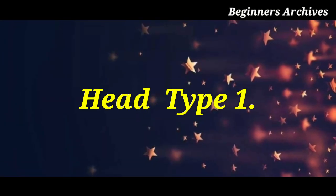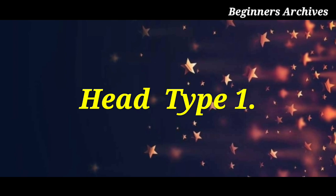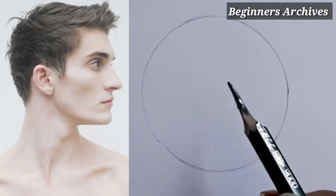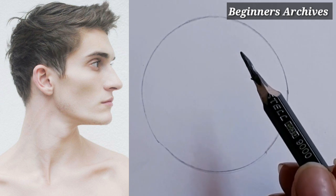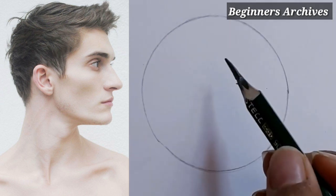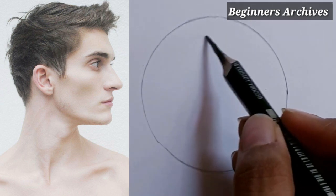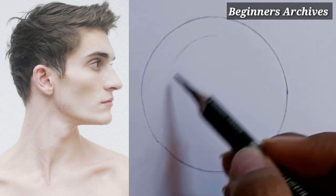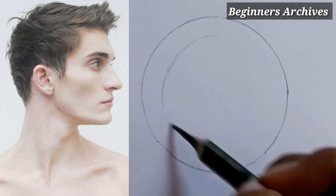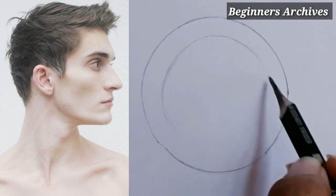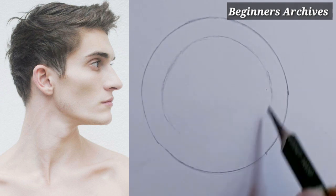So at first, we will discuss head type 1. This head is completely turned to your right side. I have drawn a circle in it and now I am drawing another circle. Basically, you may have a problem when drawing a circle. If you can't draw a freehand circle, then you can use any tool.